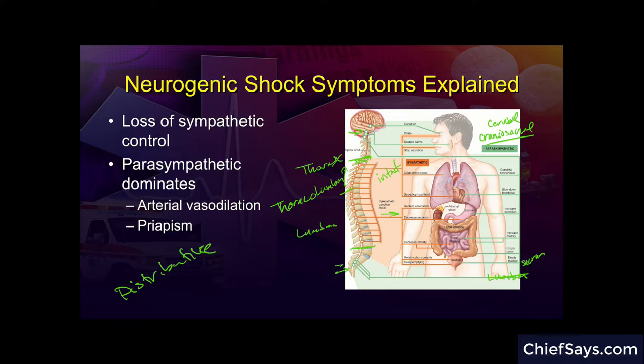As blood accumulates in the lower extremities, in males the blood accumulating due to vasodilation in the penis will result in priapism — a non-arousal erection. The blood vessels dilate as they would in arousal and blood rushes to that portion of the body. We call it priapism because it is not based on arousal. That can be a sign, in males at least, of a spinal cord injury.